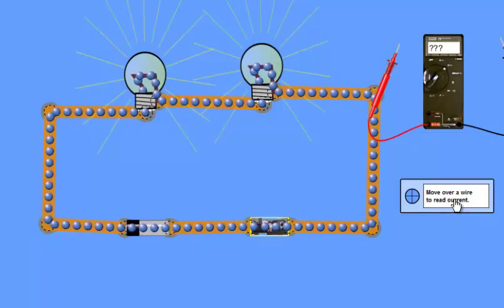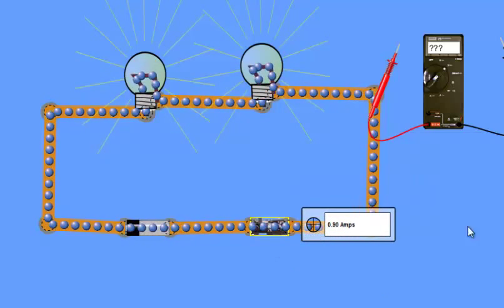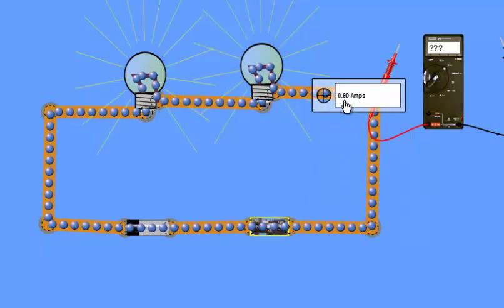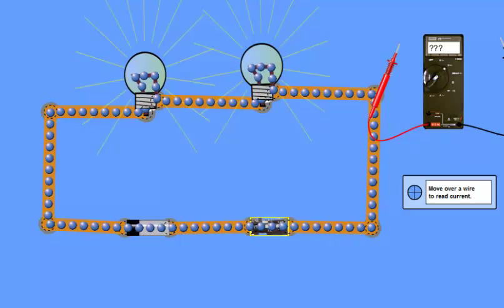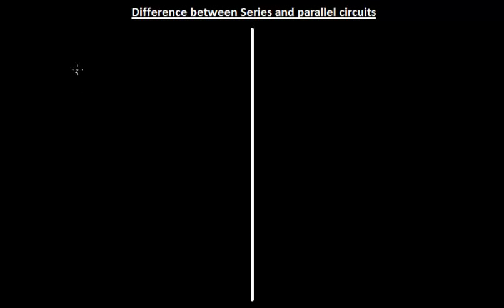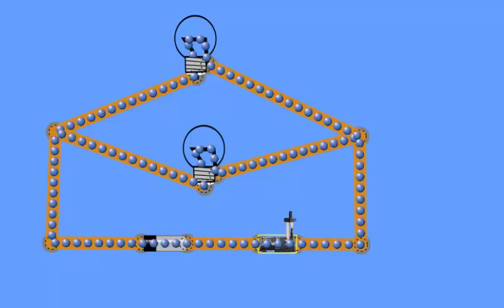Using this non-contact ammeter, I'm going to measure the current. The current is 0.9 ampere here, 0.9 ampere here, and 0.9 ampere here as well. So in a series circuit, the current I remains the same throughout, while the potential difference V differs.